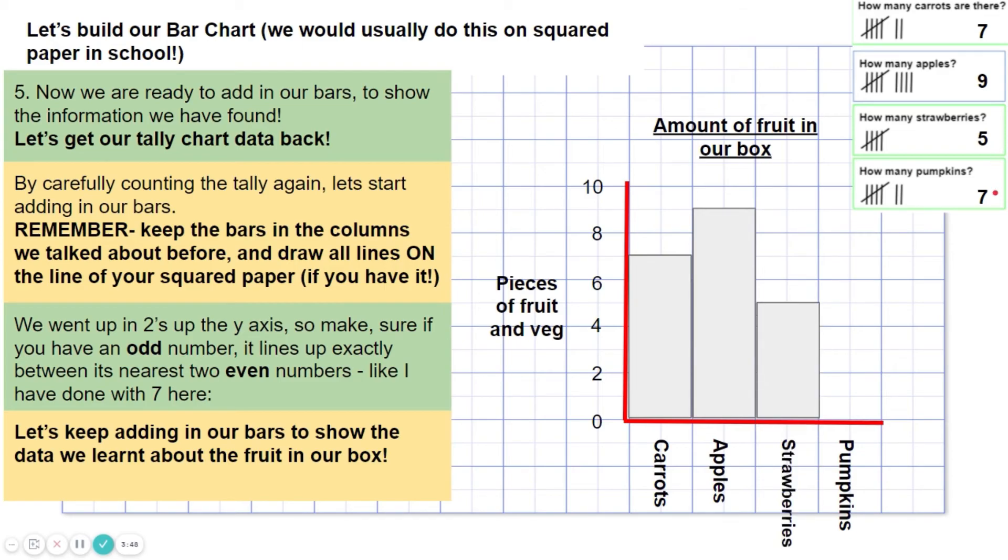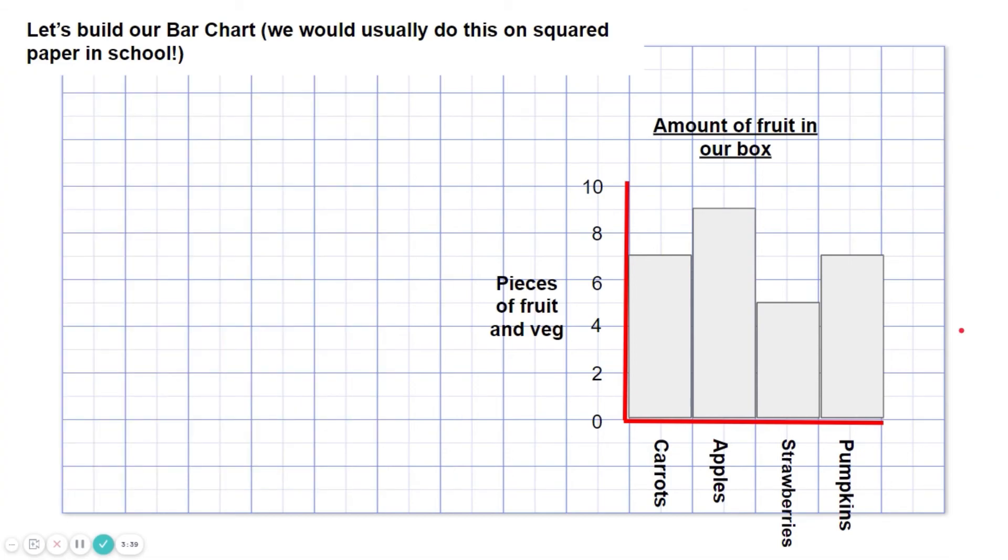Let's keep adding in our bars to show the data we learnt about the fruit in our box. Apples. Strawberries, five. And pumpkins, seven. So again, we're always in those middle of the even numbers with this one. We have created our bar chart.